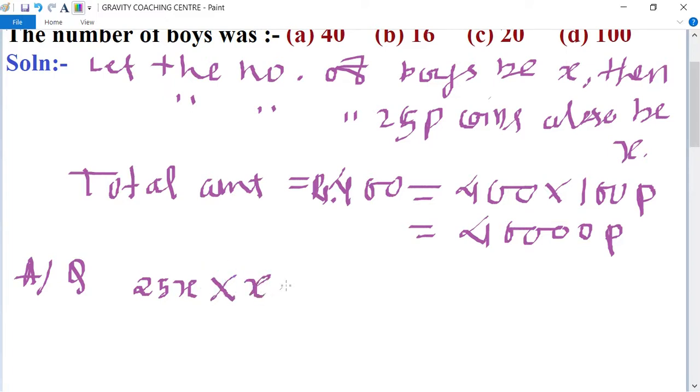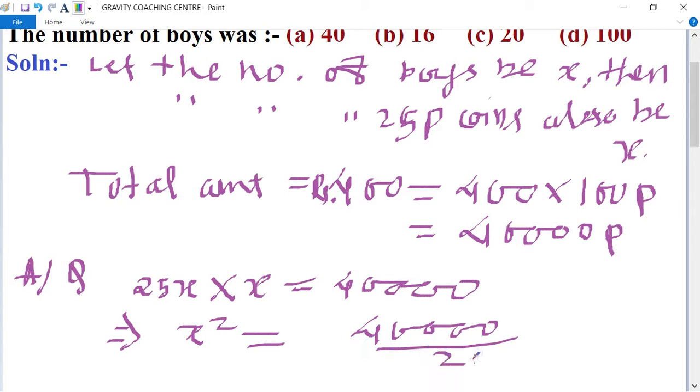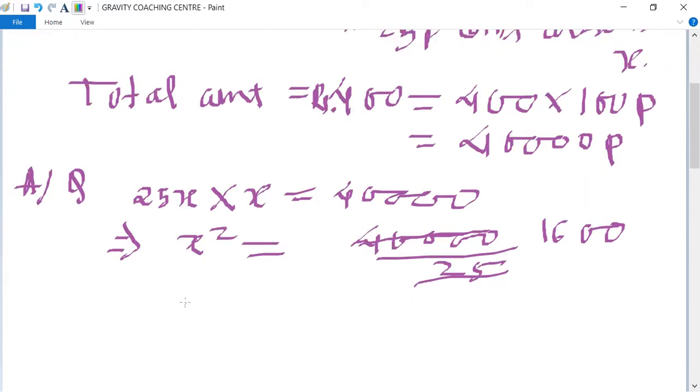Total amount is 40,000 paise, so 25x times x equals 40,000. This implies x² equals 40,000 upon 25, which is 1,600. Therefore, x equals square root of 1,600.